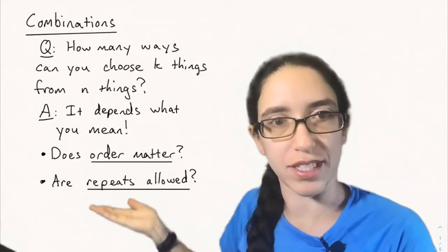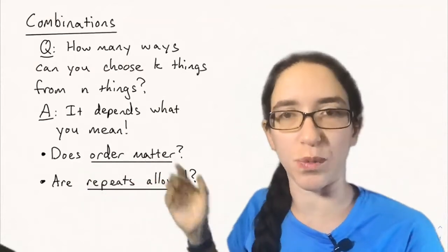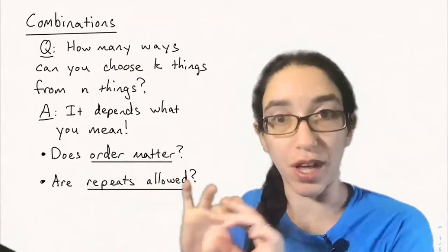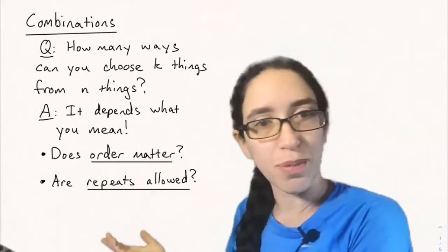There are two parameters we have to decide. Does order matter in the way that we're choosing the k things? Are you lining them up or are you just putting them in a bag? And are repeats allowed?